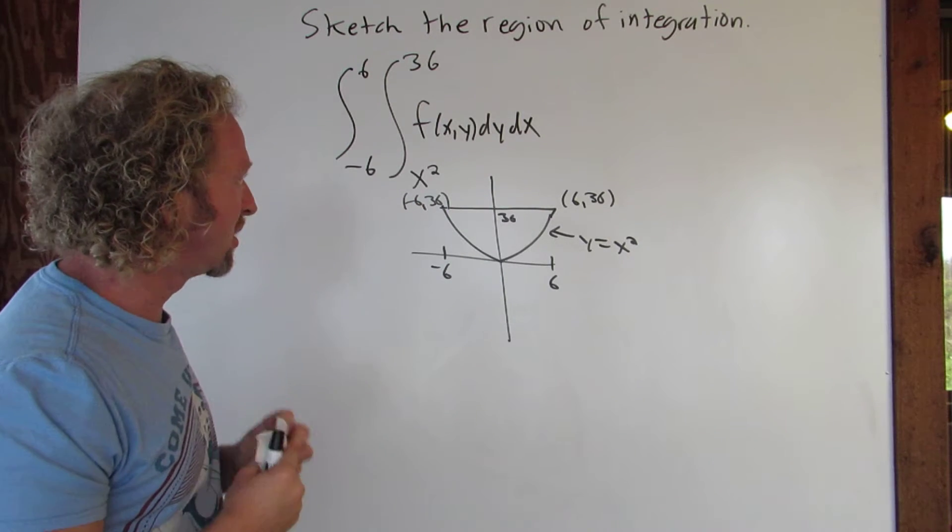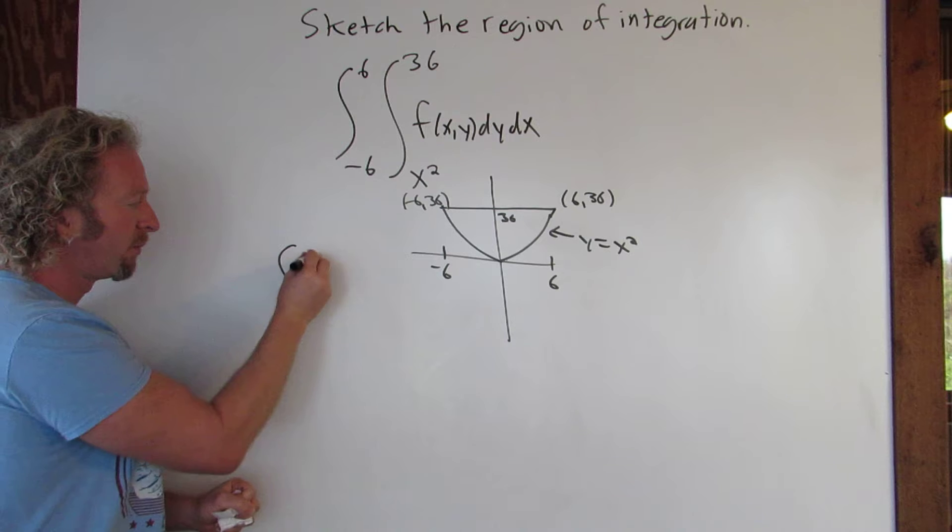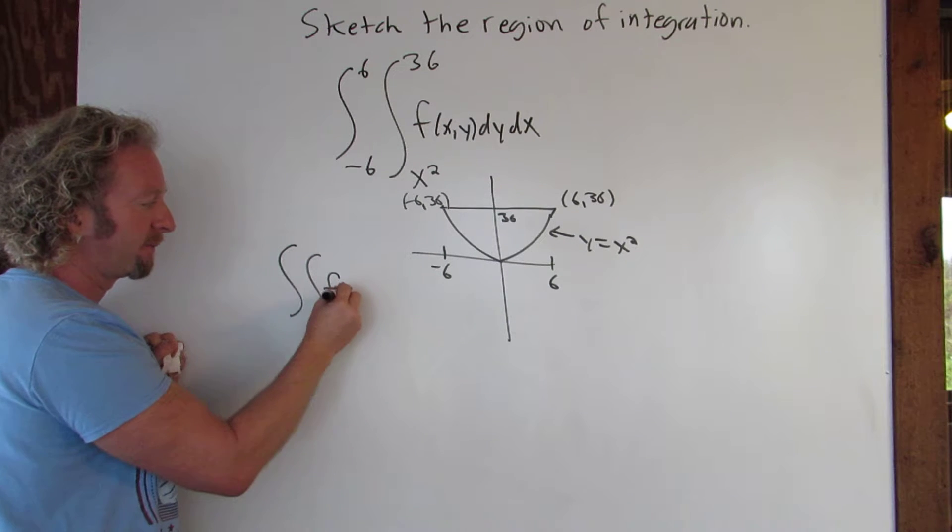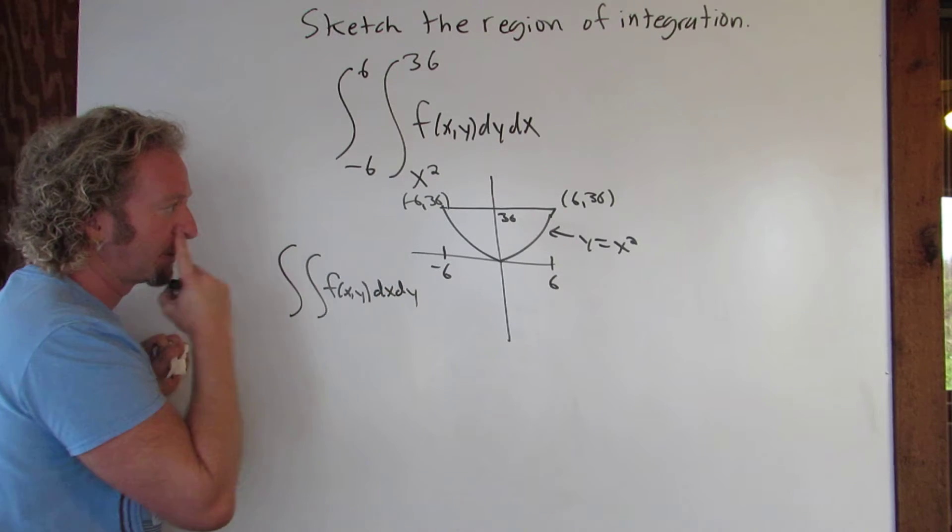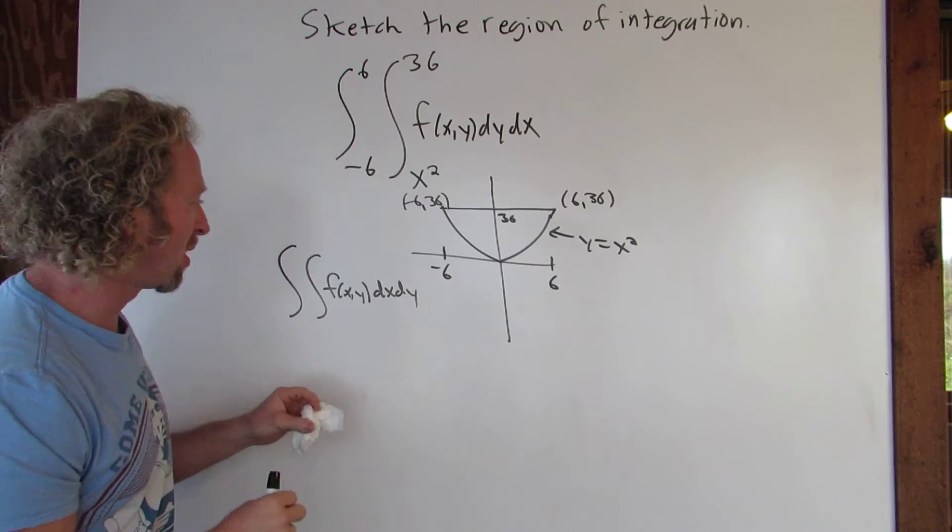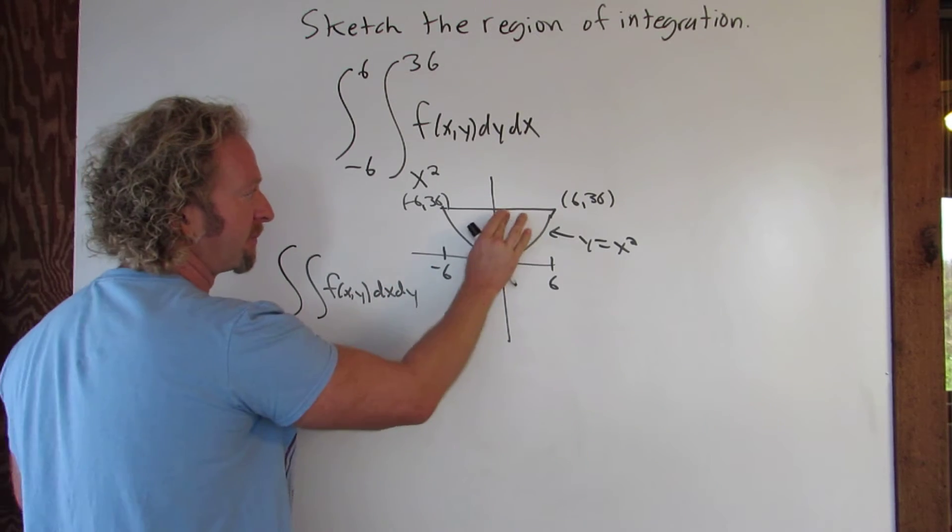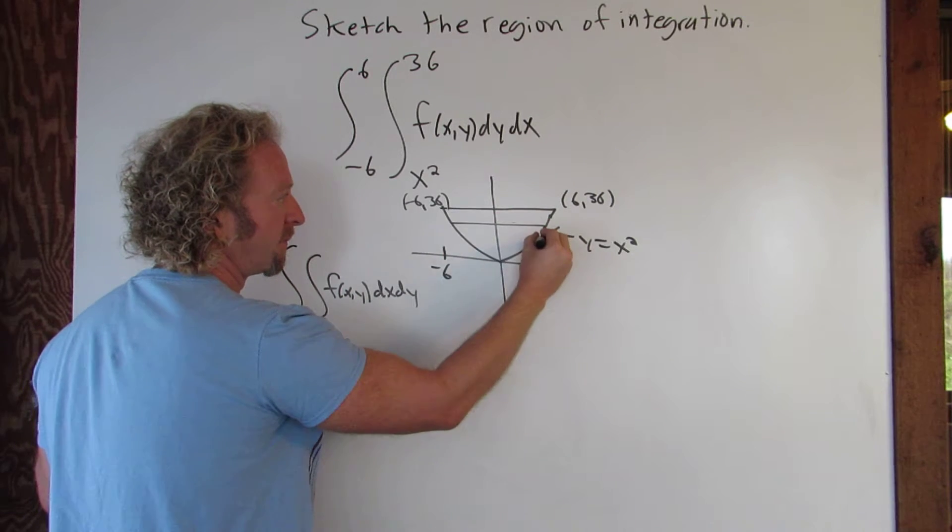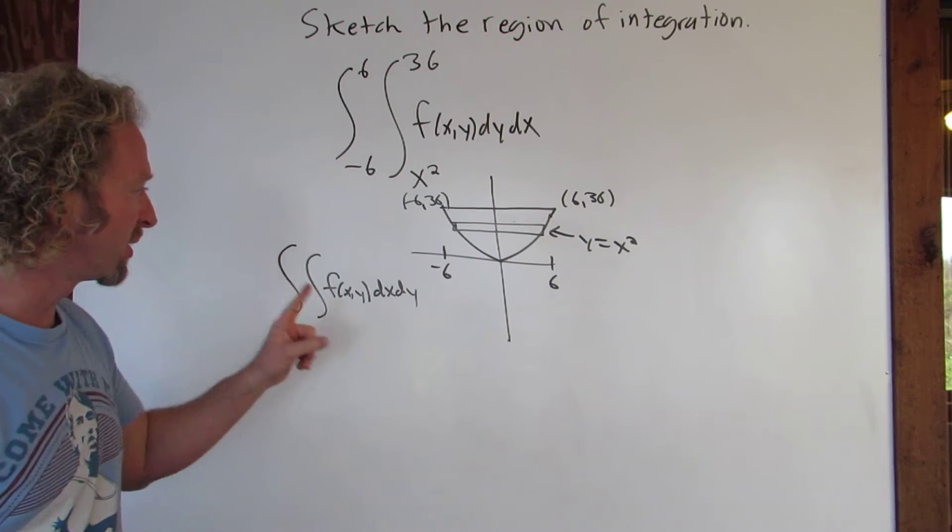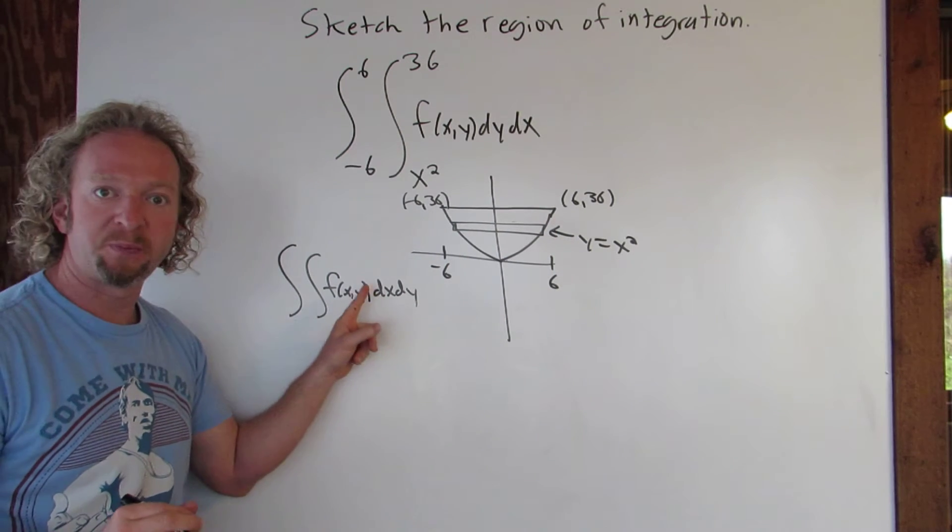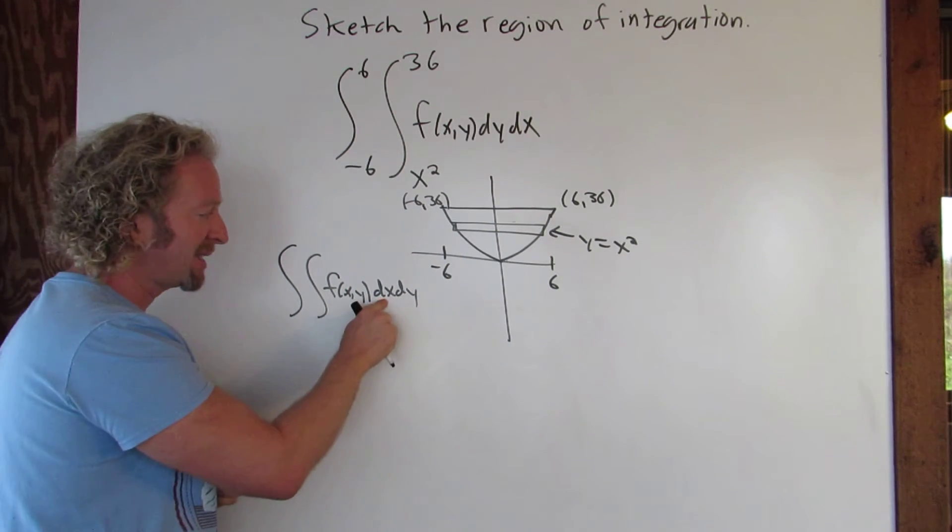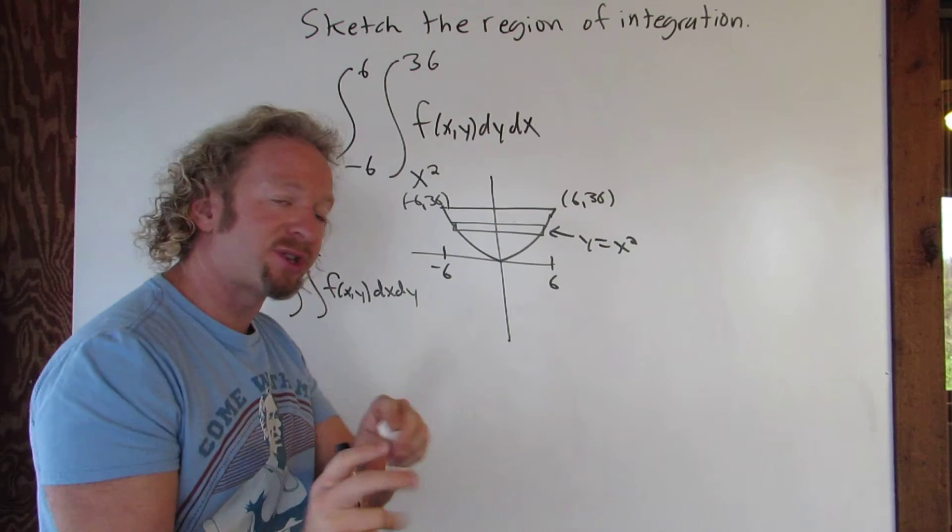Okay so now we want to switch the order. So now we want to have f of x, y, and we want to go dx first and then dy second. So what we'll do is we'll draw a horizontal rectangle this time. Okay and so now we're integrating from here to here with respect to x, right? So x is a function of y. That's why you have horizontal rectangles.